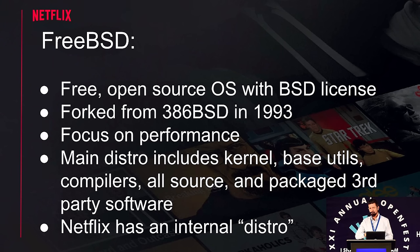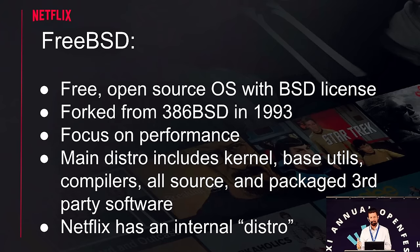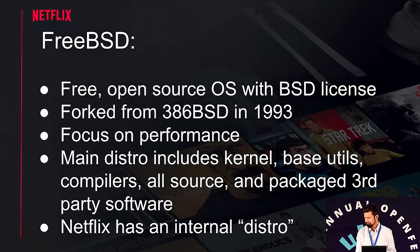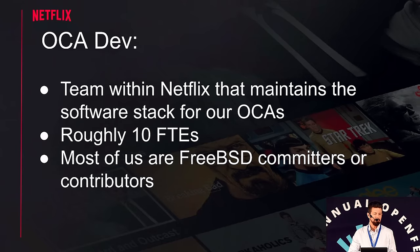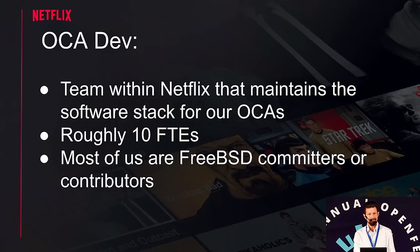At Netflix, we have our own stripped-down distribution that we run on our OCAs. That obviously doesn't include compilers or documentation or most packages, just because we don't need those things. The team I work on at Netflix is called the OCA Dev Team, and our responsibility is to maintain the software that runs on the OCAs. Most of us are FreeBSD committers or contributors — there's roughly ten of us, and it's the best job I've ever had.